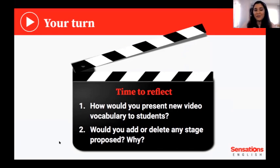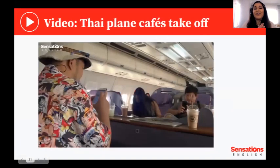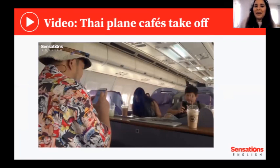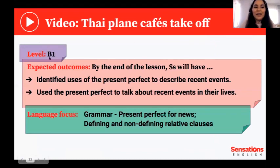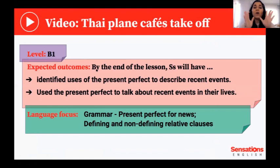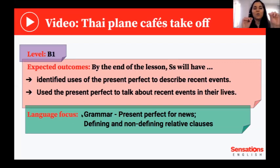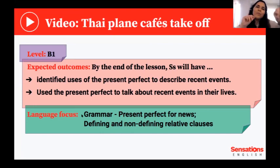Now I'm going to show you the last video — one of my favorites. I've presented this lesson to three private students and they loved it. It's called 'Spy Plane Cafe Takeoff.' Before I show you the video: we're working with B1 intermediate students. The expected outcome uses the framework we discussed: by the end of the lesson, students will have identified uses of the present perfect. We are working on grammar for this lesson — specifically the present perfect to describe recent events. Students will also have used the present perfect to talk about recent events in their own lives.